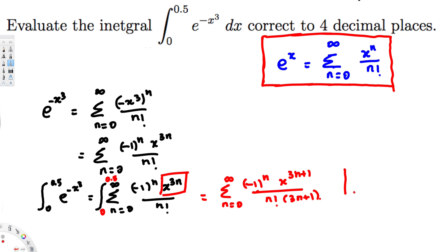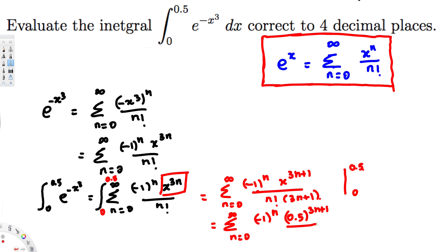Now let's plug in 0.5 first. We get the summation from n=0 to infinity of negative 1 to the power n, times 0.5 to the power 3n+1, over n factorial times 3n+1. When we substitute 0 for x, the whole thing is 0, so subtracting zero doesn't change anything.